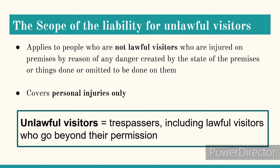Let's look at the scope of the liability laid down in the 1984 Act. The Act relates only to unlawful visitors. A lawful visitor can become an unlawful visitor if they go beyond the occupier's permission — that would make them an unlawful visitor and any liability would be discussed under the 1984 Act, not the 1957 one. It applies to people who are unlawful visitors injured on premises due to a danger created by the state of premises or things done or omitted on them. It only covers personal injuries — damage to property is not covered.